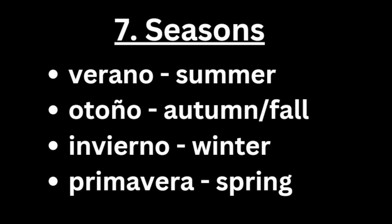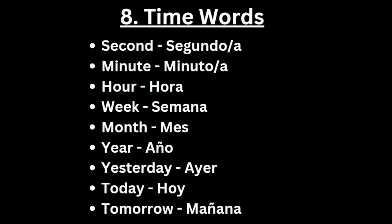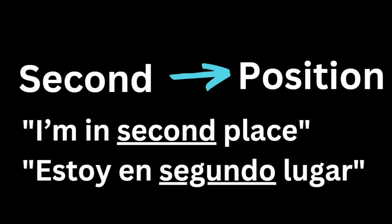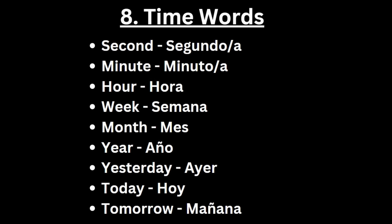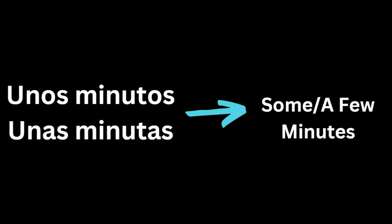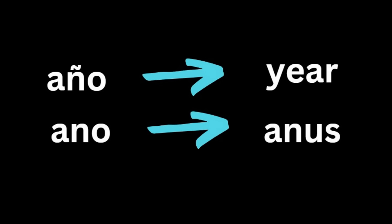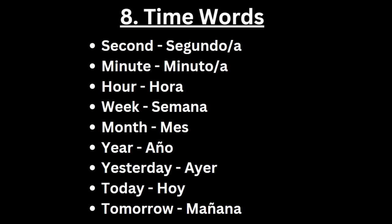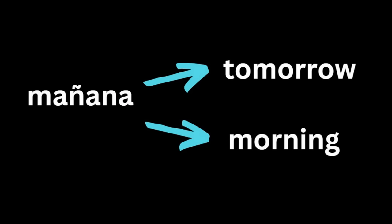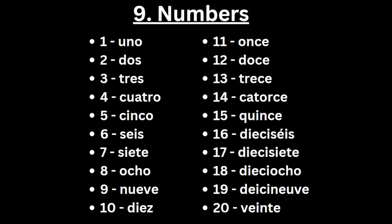Seasons: verano, otoño, invierno, primavera. Time words — some of these have genders, such as second, which is 'segundo' or 'segunda.' This can also mean second as in a position, like 'I'm in second place.' Minute is 'minuto' or 'minuta.' Hour is hora, week is semana, month is mes, year is año — make sure you use the ñ, because without it 'ano' means anus. Yesterday is ayer, today is hoy, and tomorrow is mañana, which can also mean morning depending on context.